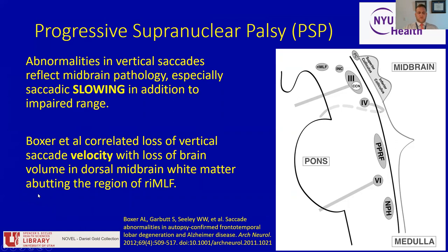The anatomy underlying abnormalities in PSP most closely localizes to the dorsal midbrain white matter abutting the region of the RIMLF. This was demonstrated in an elegant study from Dr. Adam Boxer and colleagues at UCSF, who correlated the loss of vertical saccade velocity with voxel-based correlation with volume loss of white matter in the dorsal midbrain. As mentioned, saccadic speed is just as important an abnormality in PSP as saccadic range. When we are referred patients by movement disorders colleagues, one of the most important things we look for is saccadic speed at the bedside.